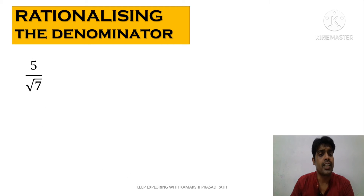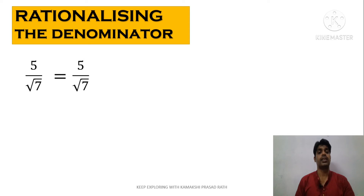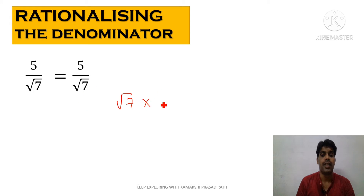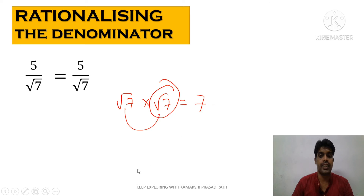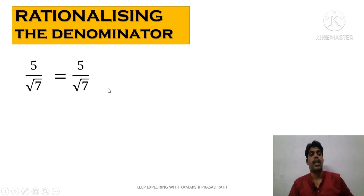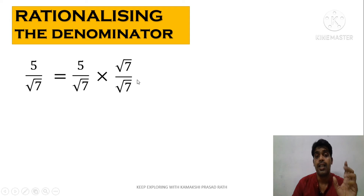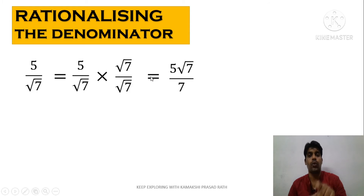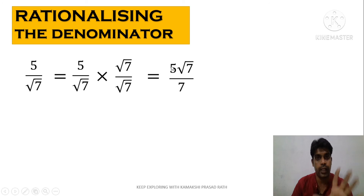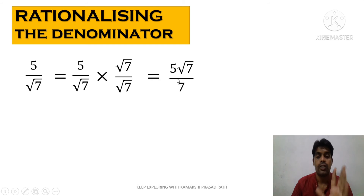Let's consider the question 5 by root 7. The denominator is root 7, so the rationalizing factor is root 7 — because root 7 times root 7 gives 7. We multiply both numerator and denominator by root 7. So we get 5 root 7 in the numerator and 7 in the denominator. The answer is 5 root 7 by 7.